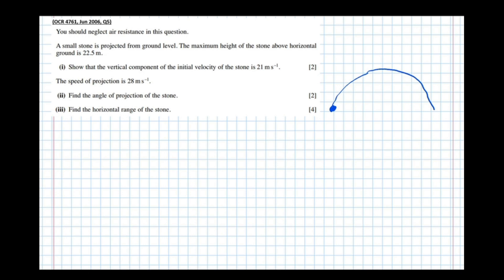And what we're told is the maximum height, that's roughly the position of the maximum height, is 22.5 metres. Show that the vertical component of the initial velocity of the stone is 21 metres per second.